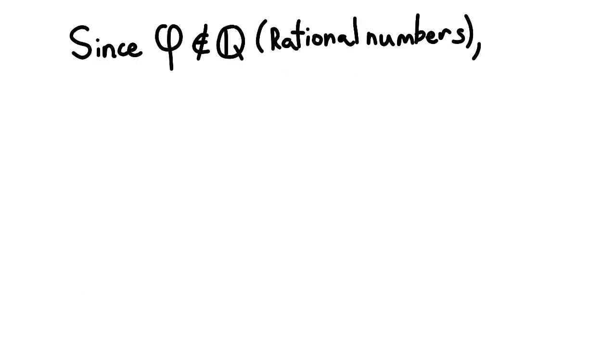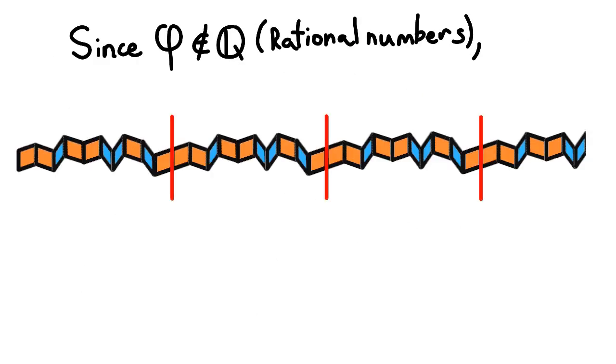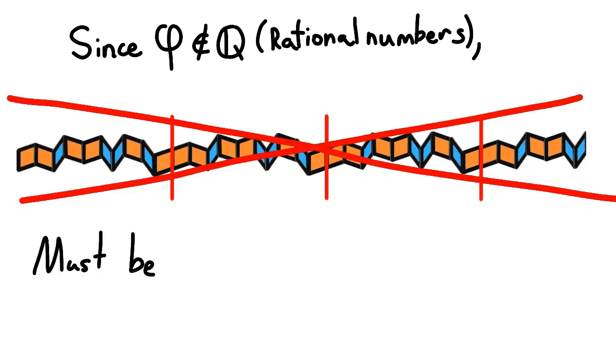As the golden ratio is irrational, this means that the pattern of tiles along one line must never repeat themselves, and thus makes them aperiodic.